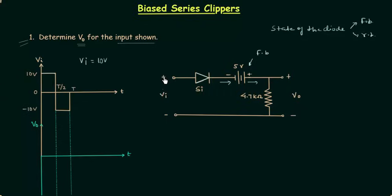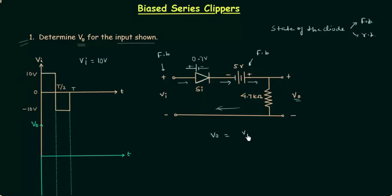The polarity is plus-minus and we have current in the clockwise direction because of VI, which is also matching with the direction of the arrow, so VI is also forward biasing the silicon diode. Both sources are forward biasing the silicon diode, so I will replace it with its equivalent model of 0.7V. Using Kirchhoff's voltage law: VO = VI − 0.7V + 5V. With VI = 10V, we get 10 − 0.7 + 5 = 14.3V as the output voltage.